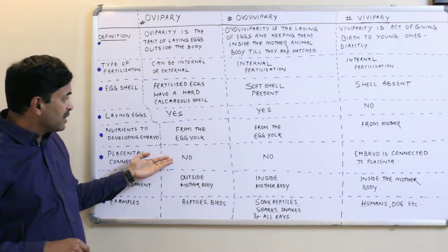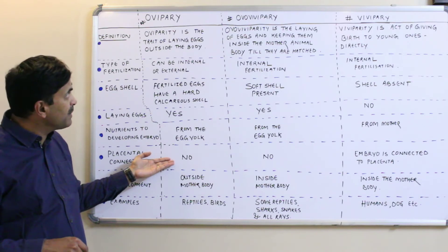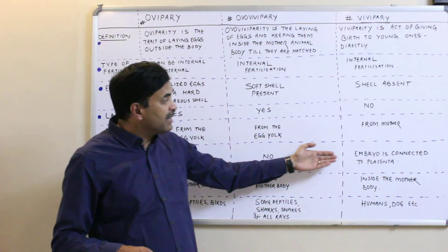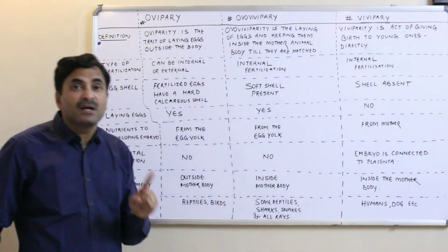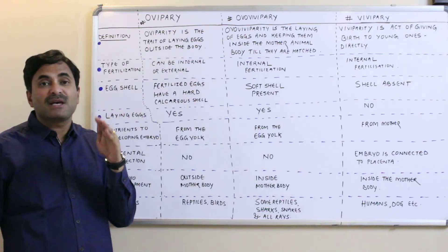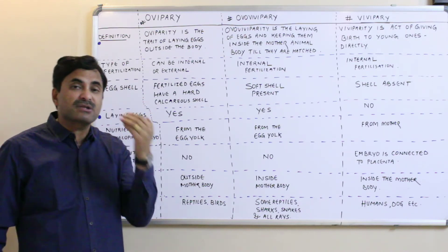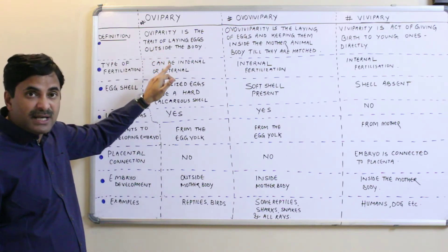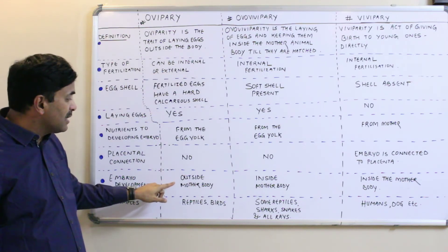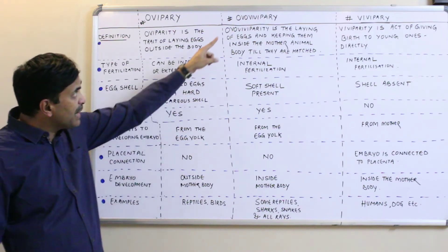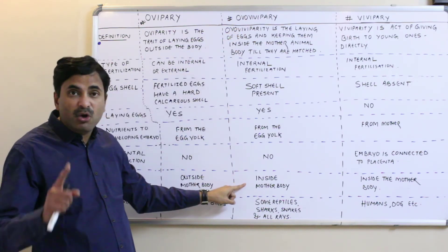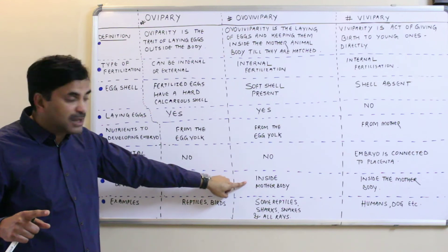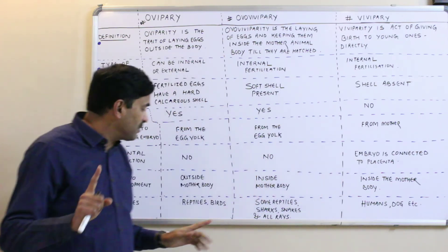Regarding placental connection: there is no placenta in oviparous organisms, and no placenta in ovoviviparous organisms either. In viviparous organisms, the embryo is connected to the placenta, which serves many purposes — gaseous exchange, providing nutrients, excretion, etc. For embryonic development: in oviparous organisms it occurs outside the mother's body; in ovoviviparous and viviparous organisms it occurs inside the mother's body.